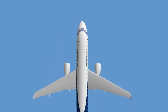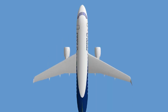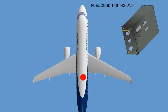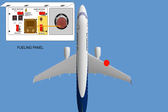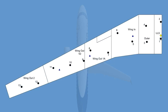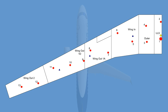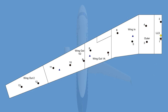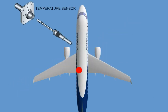The system includes the following components: the fuel conditioning unit in the center electrical bay, and the refuel-defuel indicator on the fueling panel. Each wing has 13 tank units, one compensator, and one fuel low-level sensor. A temperature sensor is installed in the left-hand tank only.